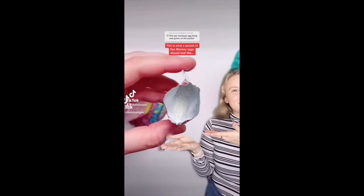This is what a packet of sea monkey eggs should look like. But if you open your sea monkey eggs packet and they look like this, this means that they've been destroyed by moisture and most likely will never hatch. So the best thing to do is politely contact the place that you bought them or the original sea monkeys company.